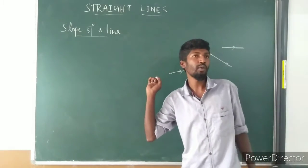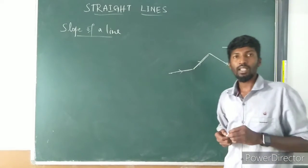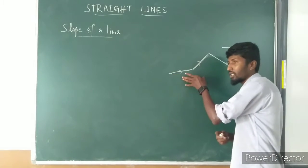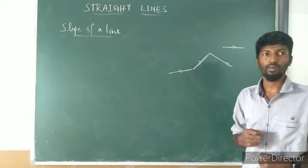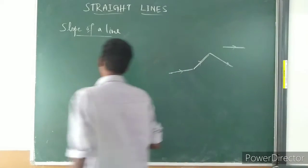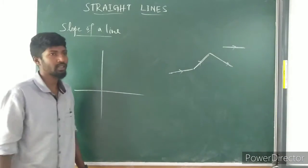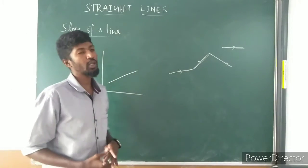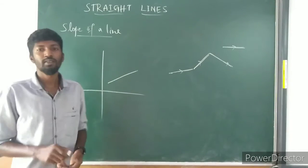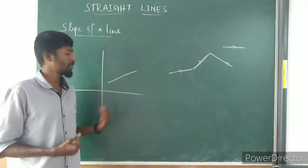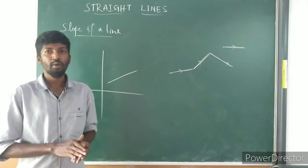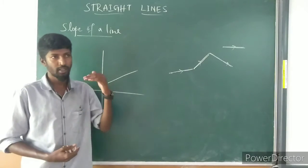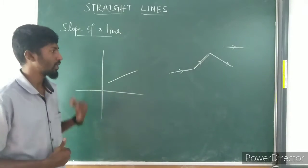So, slope of a line. Mathematically, slope describes the direction and how much the line is steep. Slope is calculated by finding the ratio of the vertical change to the horizontal change between any two distinct points.